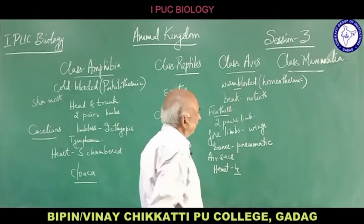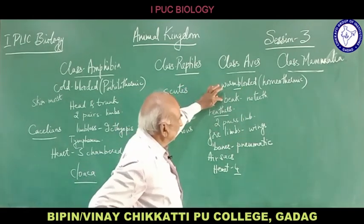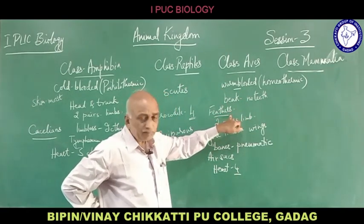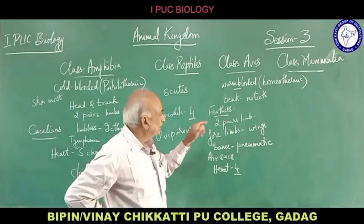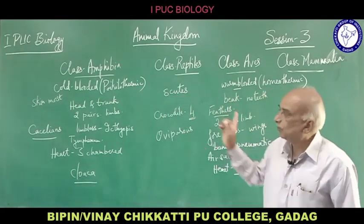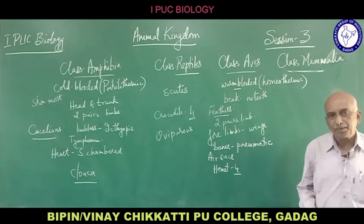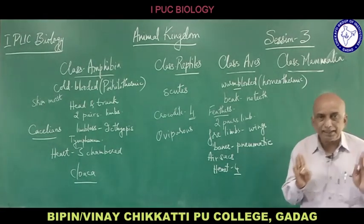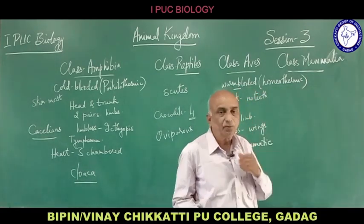All birds are included under class Aves. Warm-blooded — also called homeothermic — animals maintain a constant body temperature. Cold-blooded animals change their body temperature according to the environment; warm-blooded animals cannot change it. We humans are warm-blooded, maintaining a constant 36.6 degrees centigrade.